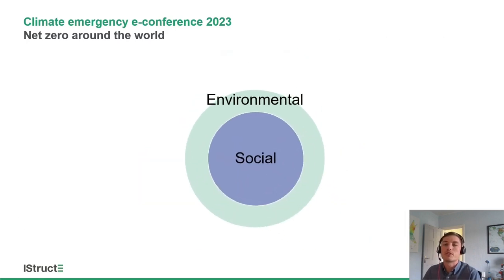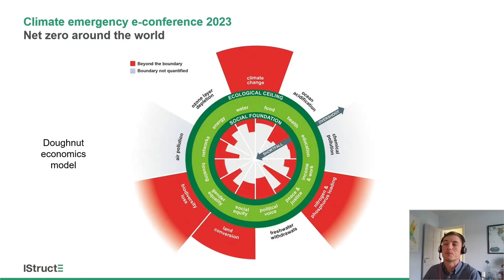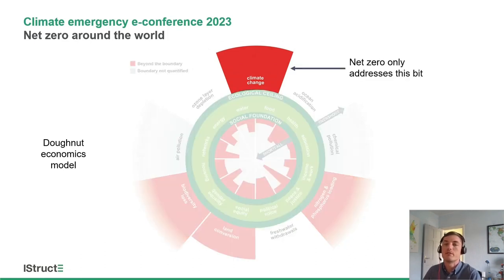You can reframe this as well. If you think about it as a kind of social foundation and an ecological ceiling — the environmental and social bits — it starts to look a lot more like the doughnut economics model. Net zero only really addresses the climate change challenges and the ecological ceiling we're exceeding when it comes to global warming. It's also good to see from earlier presentations that UK public sector projects do cover a wide variety of these different themes.